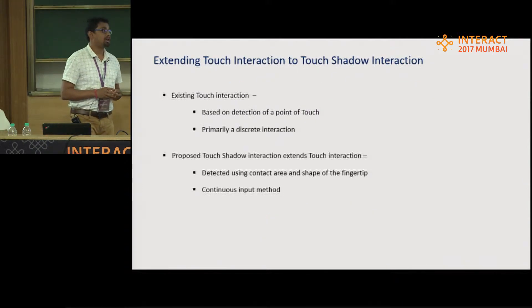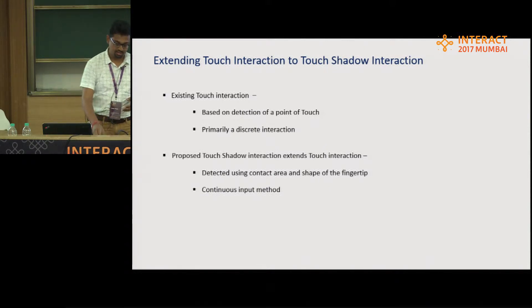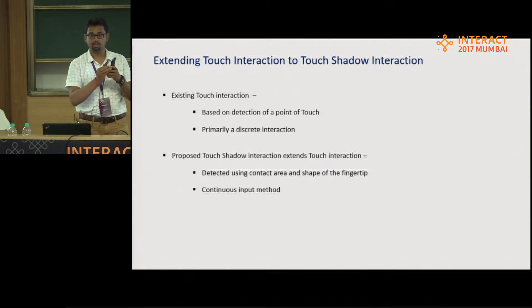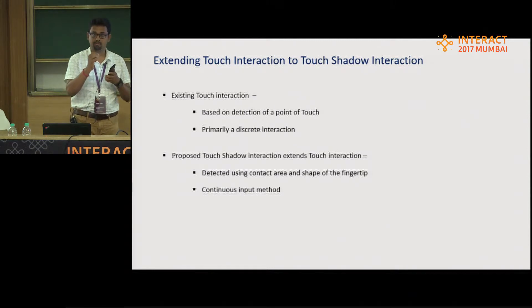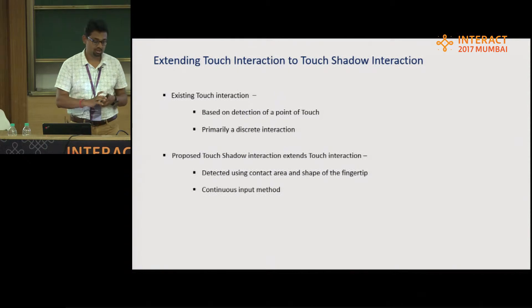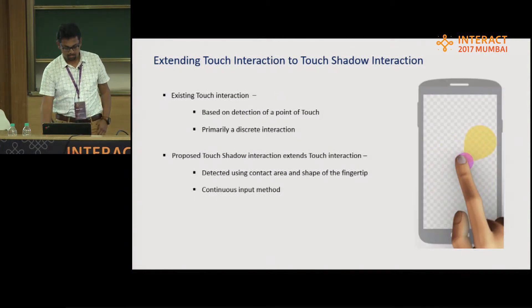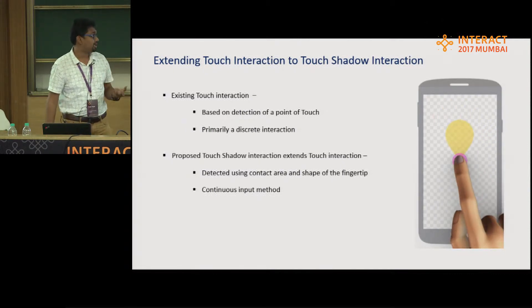What we have done is we have tried extending the existing touch interface and touch interaction gestures. The existing kind of touch interaction gesture is based on point effect. When you touch a screen, what is recorded is the capacitance value changing at that point, and you get the x and y coordinate — that is the way touch works. How we are extending this is with what we call a new interaction method called Touch Shadow.